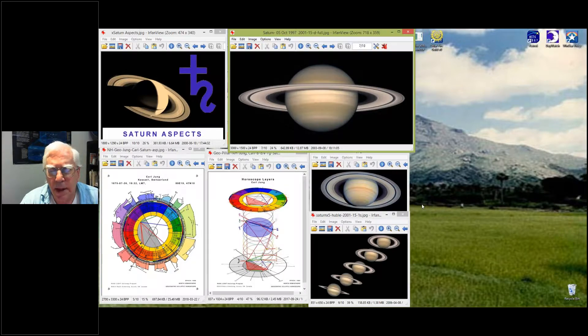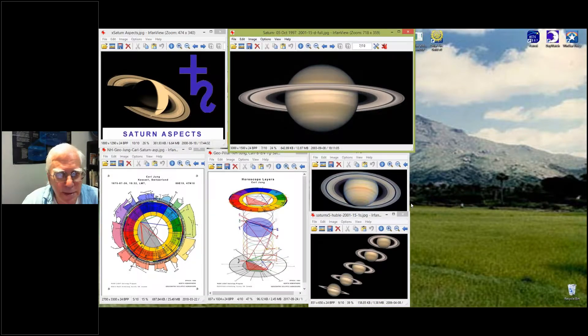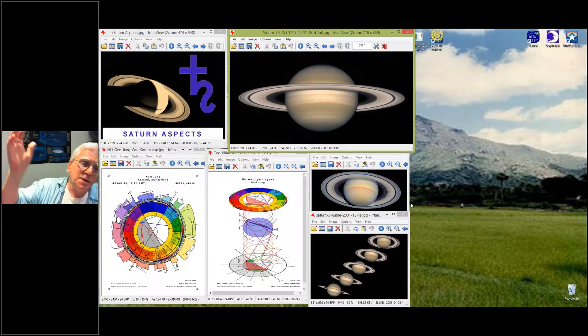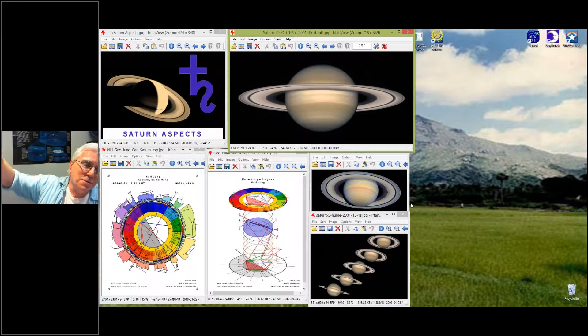So the outer planets, Saturn does not so much affect the outer planets. The outer planets affect Saturn. Saturn's the natural order of things, and the outer planets come in and try and change the natural order of things.